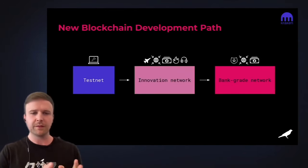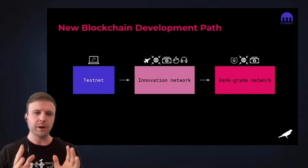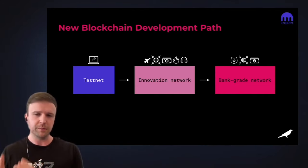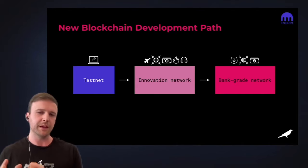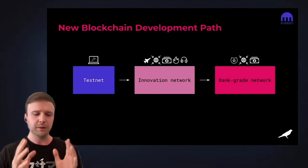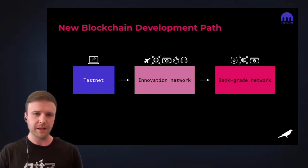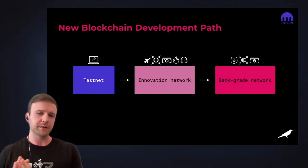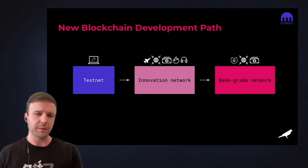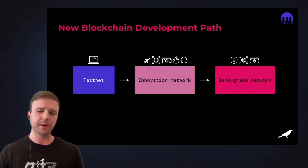What Gavin created with Kusama is this concept of an innovation network, or what's sometimes referred to as a canary network, where instead of going from testnet to mainnet — this bank-grade network that's been heavily tested and has lots of security backing — there's actually a new step in the middle that Kusama is introducing. In this innovation network, you can launch new applications or new parachains in a real-life setting with significant amounts of value at stake, but not the same level of risk as you would have on the main network.